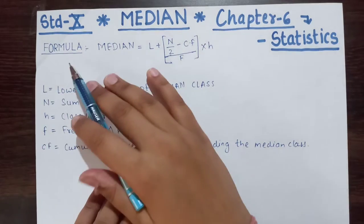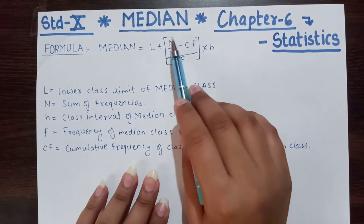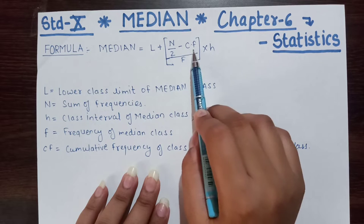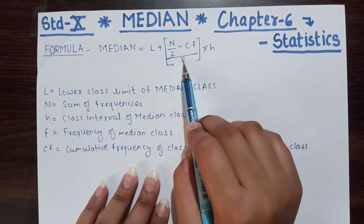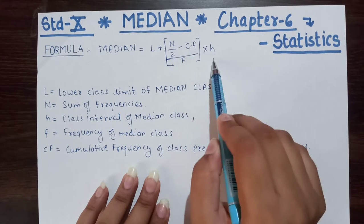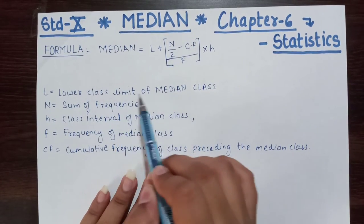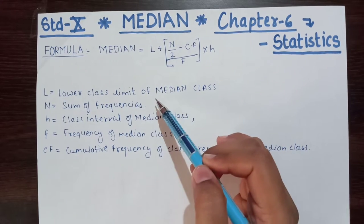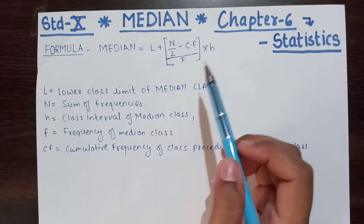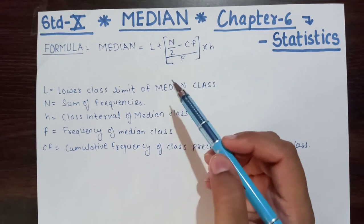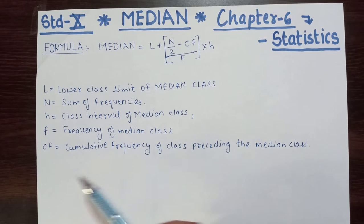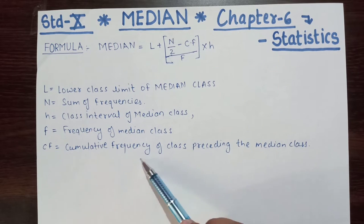Here is the formula of median: L plus bracket N upon 2 minus cumulative frequency CF, upon F that is frequency, bracket close, into H. What these terms mean: L means the lower class limit of the median class, N means the sum of frequencies, H means the class interval of the median class, F is the frequency of the median class, and CF is the cumulative frequency of the class preceding the median class.